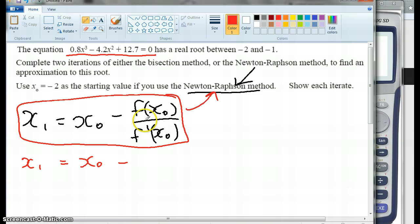Okay, so here we are going to write the equation: 0.8x³ - 4.2x² + 12.7, and underneath we're going to put f'(x).